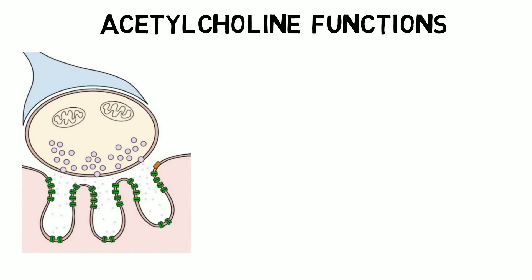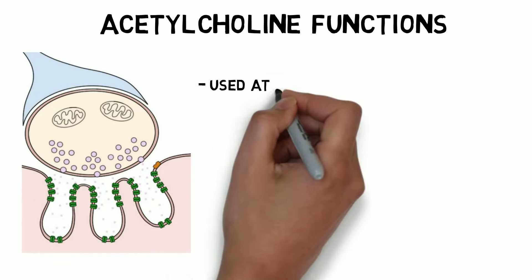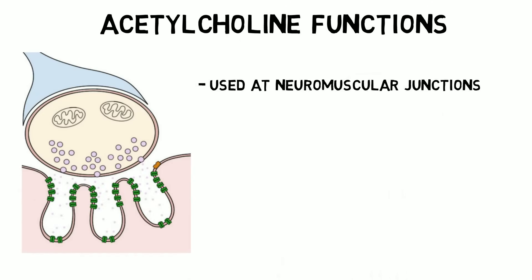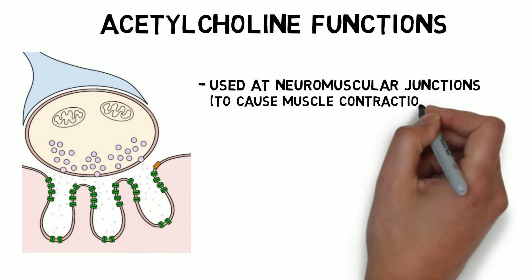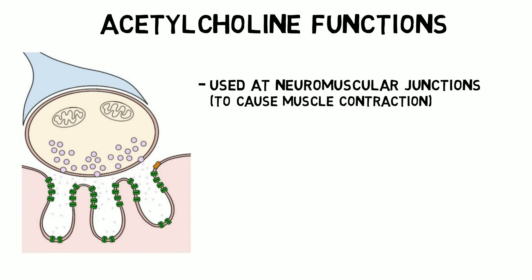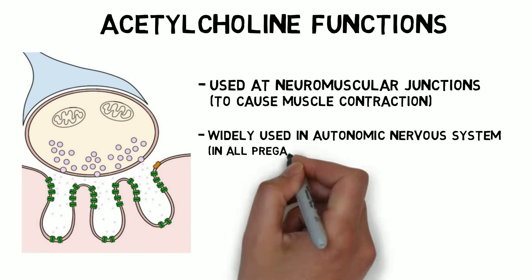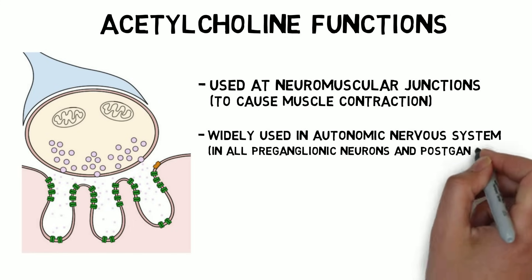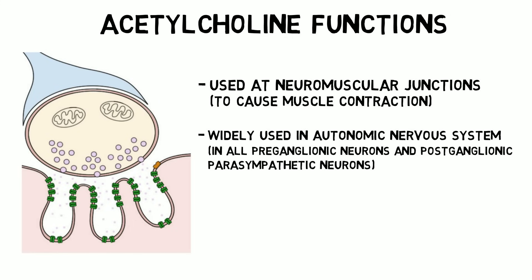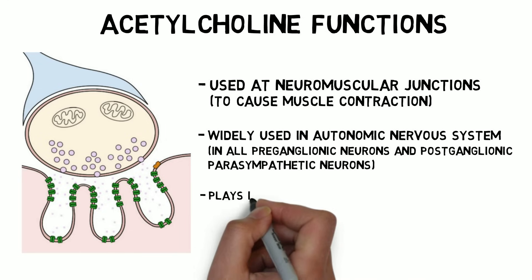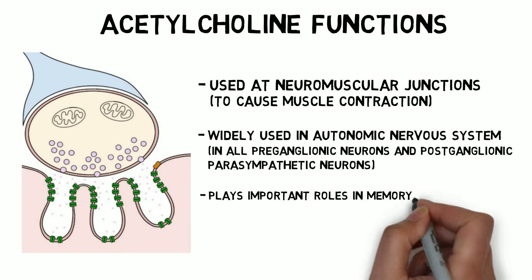Acetylcholine has a variety of functions in the nervous system. It is the main neurotransmitter used at neuromuscular junctions and is responsible for muscle contraction. It is also widely used in the autonomic nervous system. Its functions in the brain are still not fully understood, but it does appear to play important roles in memory, arousal, and attention.